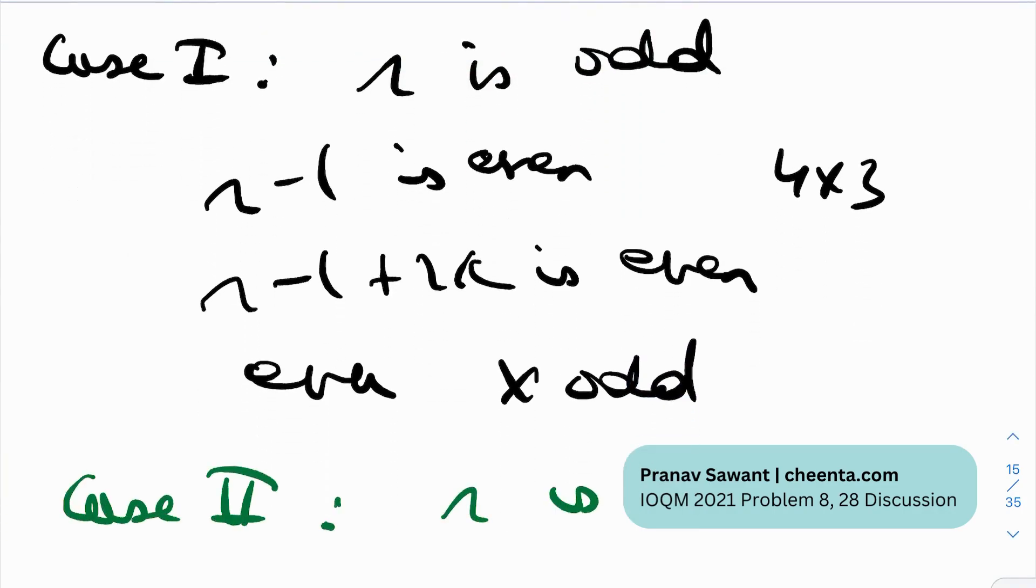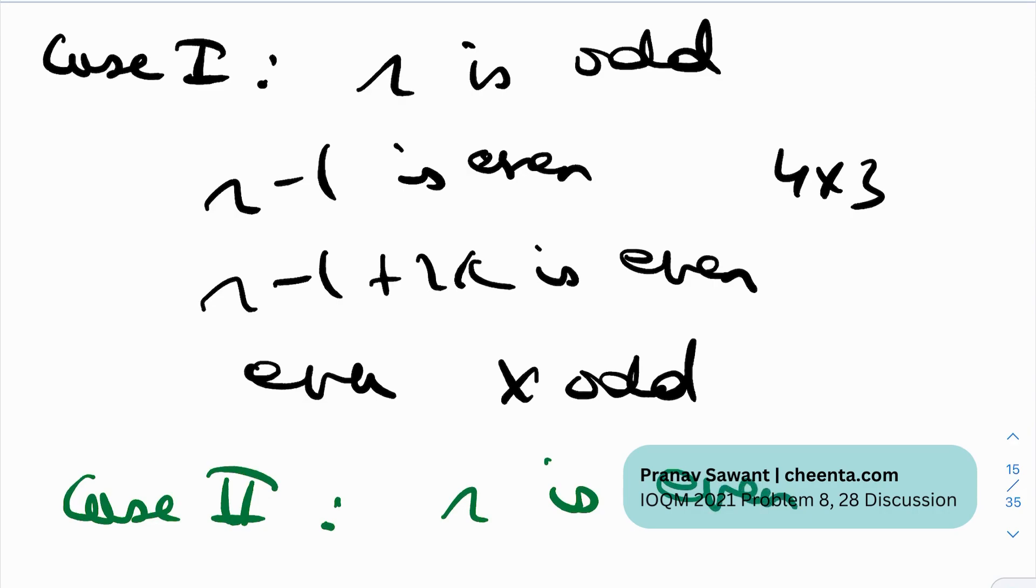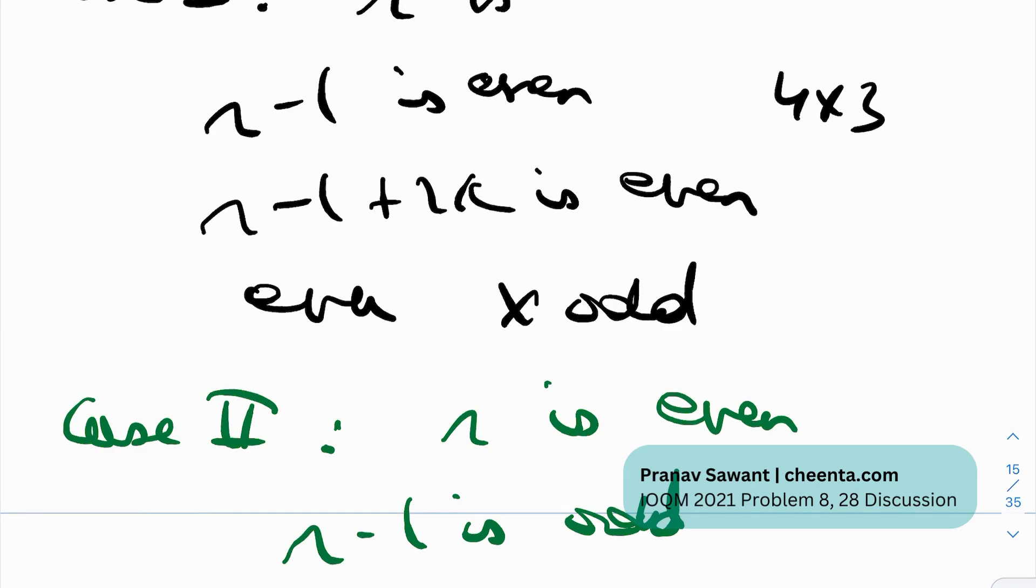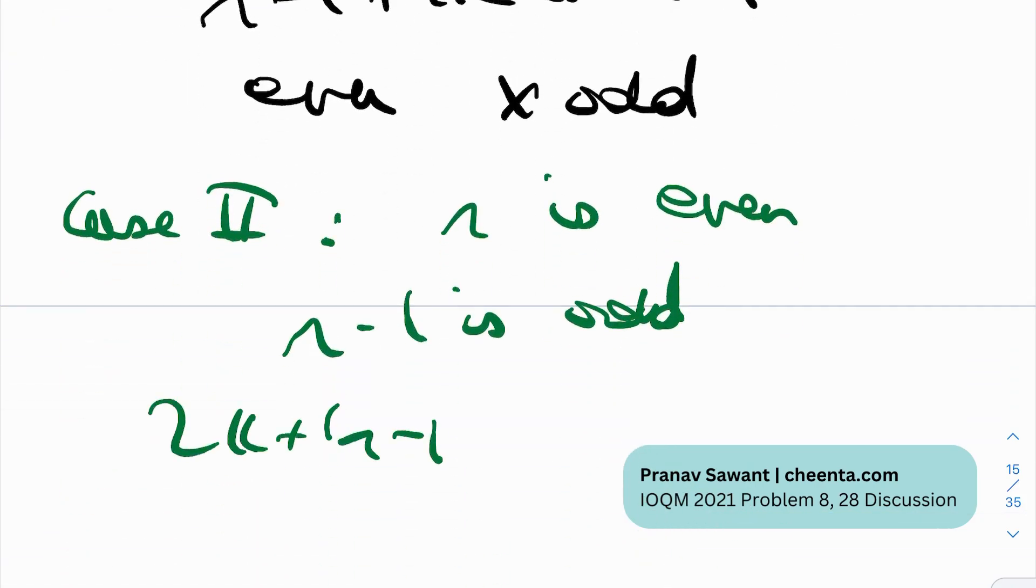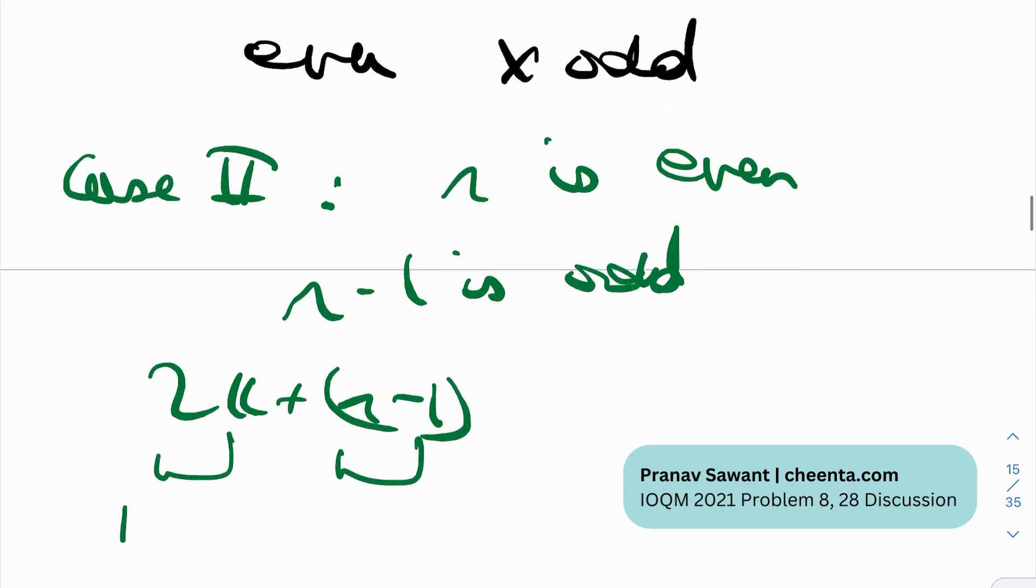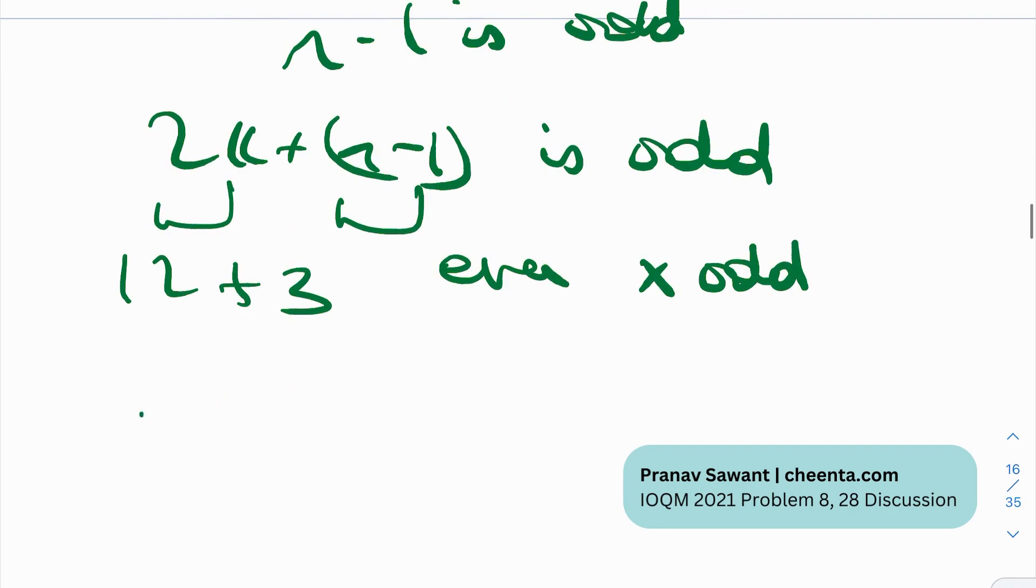So case 2 is obviously where R is even. R can be either odd or even. If R is even, R minus 1 is odd. So what would be 2K plus R minus 1? This is an even number plus an odd number. An even plus odd is, for example, 12 plus 3 is 15. So it is odd. So again, here you are multiplying an even by an odd term. So basically, 2N is essentially an even times an odd term.